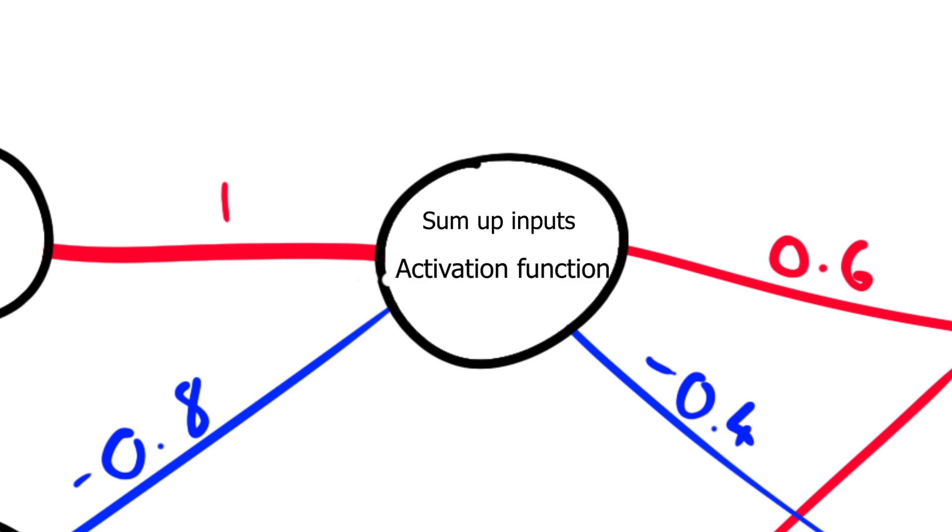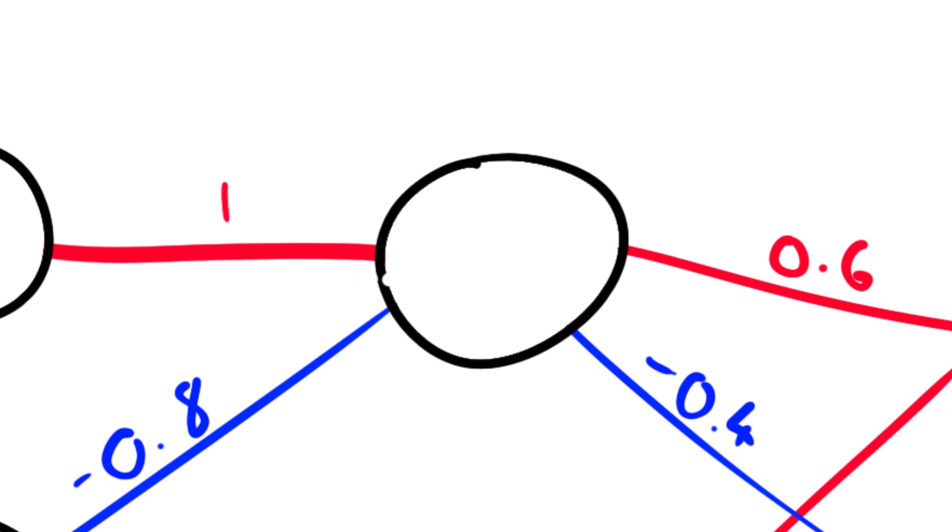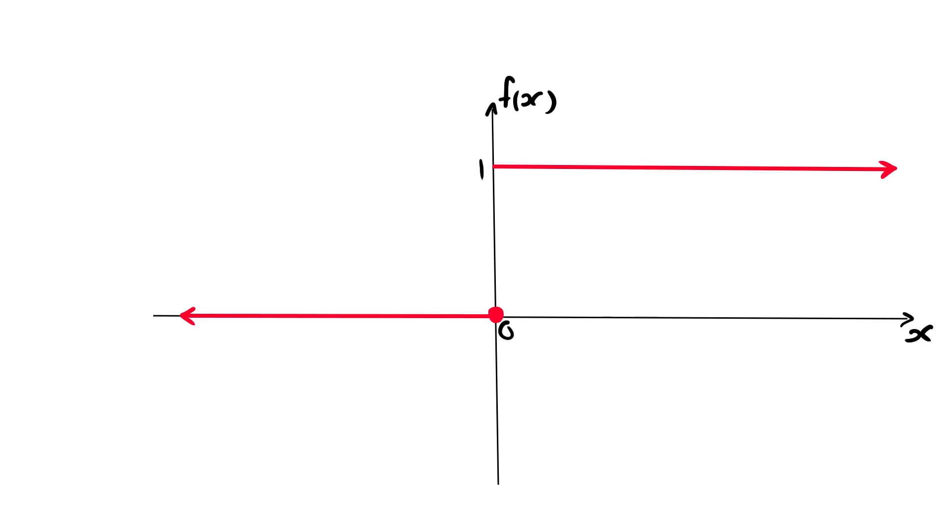There are many activation functions you can use, but for this video, we're going to be looking at one of the simplest activation functions, the step function. The activation function computes how much input the neuron needs before it gets triggered. Okay, this is the function. And I know it looks a bit scary, but it really shouldn't. It's not scary. All it does is take the sum of the inputs, which we'll call x. It returns one if x is positive, and returns zero if x is zero or negative.